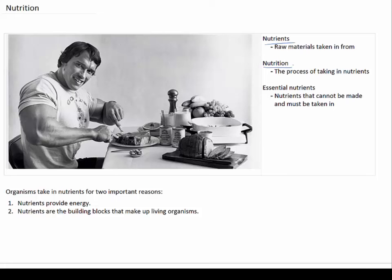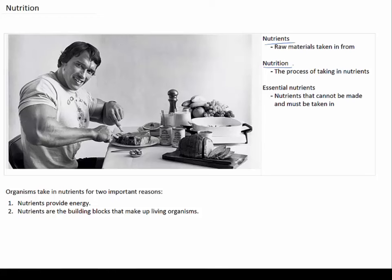Nutrition differs from organism to organism. Some nutrients can actually be made by organisms from basic materials. For example, plants are able to photosynthesize and create carbohydrates in the form of glucose, whereas we can't. Many nutrients cannot be made by organisms — humans are not able to make carbohydrates or minerals. These nutrients have to be taken in from an outside source and they are referred to as essential nutrients.